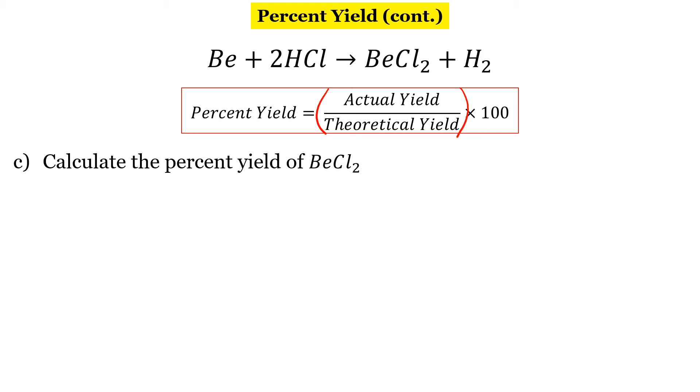So our actual yield was 7.35 grams over what we expected to get, which was 8.22. I'm going to go ahead and put that in parentheses. And then we're going to multiply that by 100. So I get an answer of 89.4 percent.